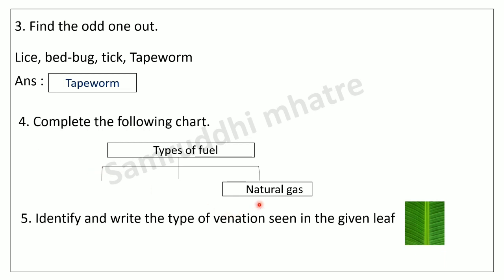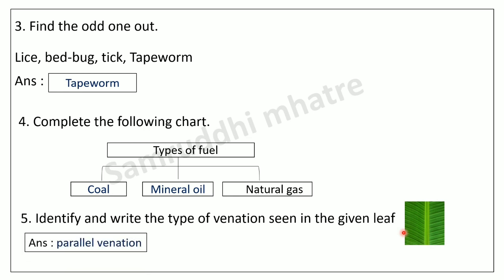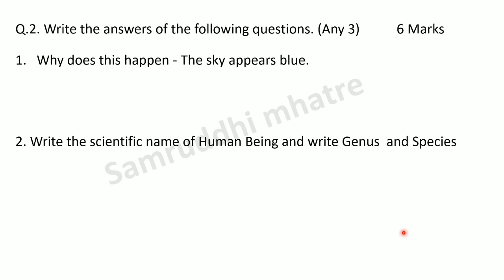The fifth question: identify and write the type of venation seen in the given leaf. The leaf shown is a banana leaf. The veins in a banana leaf are parallel to each other, so the type of venation is parallel venation.